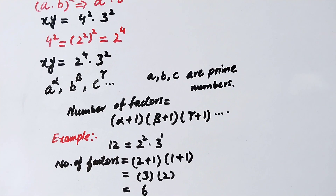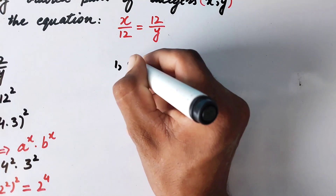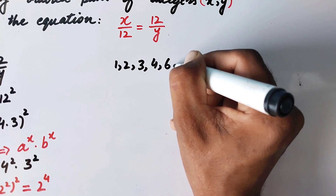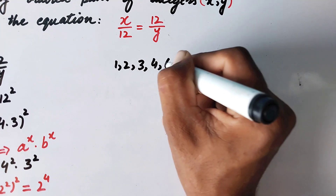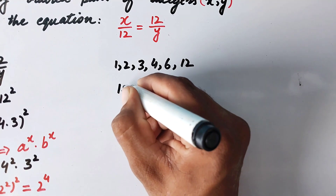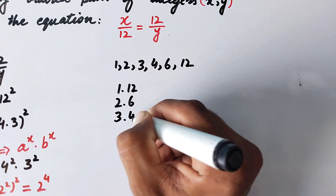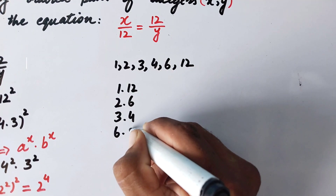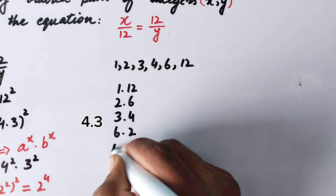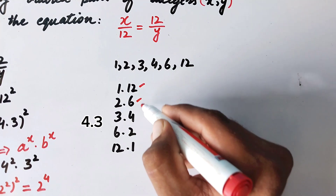The factors of 12 are 1, 2, 3, 4, 6, and 12 — there are 6 factors. We can also write these as pairs: 1 times 12, 2 times 6, 3 times 4, 4 times 3, 6 times 2, and 12 times 1. These are the 6 factor pairs of 12.